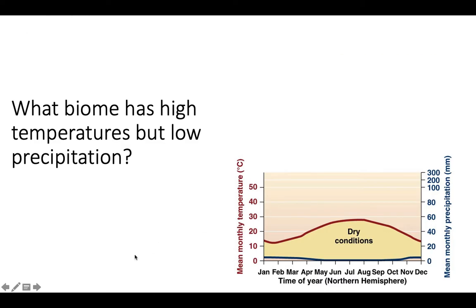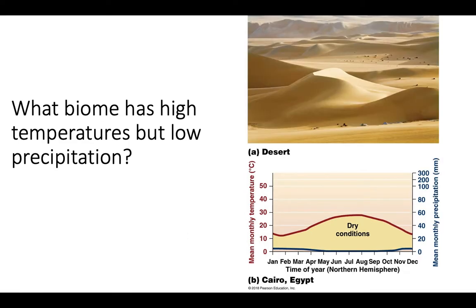Which biome is going to have high temperatures but low precipitation? Here's the climatogram for it — see if you can figure it out. Hopefully that was pretty easy. It's the desert. It's very hot most of the year and very little rain all year long. That's the desert — probably the easiest one.